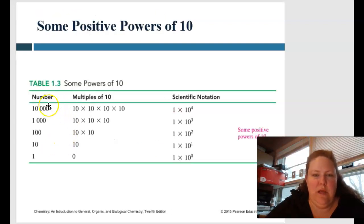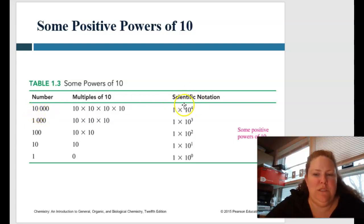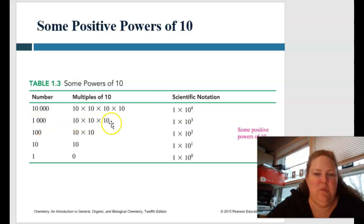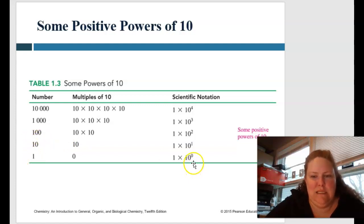Here are a couple more examples. For 10,000, how many times do we remove the decimal point to make it a single number? One, two, three, four — so that's 1 times 10 to the fourth. Similarly, moving three times gives 10 to the third power, two times gives 10 to the second power, one time gives 10 to the first power, which is just 10, and 10 to the zero power is just 1.